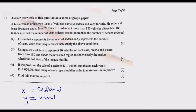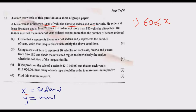We need to write four inequalities to satisfy the above conditions. Let us go through this slowly as we derive them. First, he orders at least 60 sedans. 'At least' means a minimum — that's the starting point. So x is greater than or equal to 60. That is what 'at least 60' means: x ≥ 60.